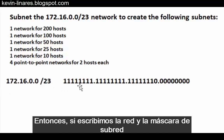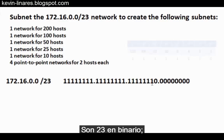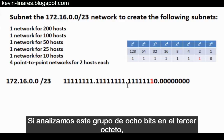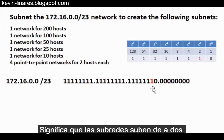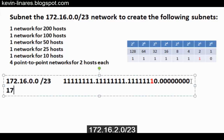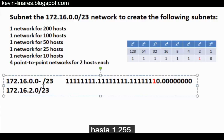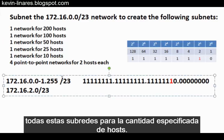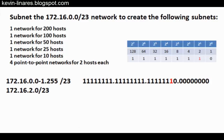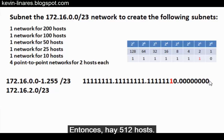By writing out the network and the subnet mask in binary, we see that we have a /23 subnet mask — 23 ones in binary. The last bit is in the twos place. If we look at this 8-bit grouping in the third octet, we see that the last one is in the twos place. That means the subnets go up by two, so the next subnet will be 172.16.2.0/23. The address space goes from 172.16.0.0 all the way up to 172.16.1.255. Starting from a /23 subnet mask, we have nine host bits, so effectively there are 512 hosts.